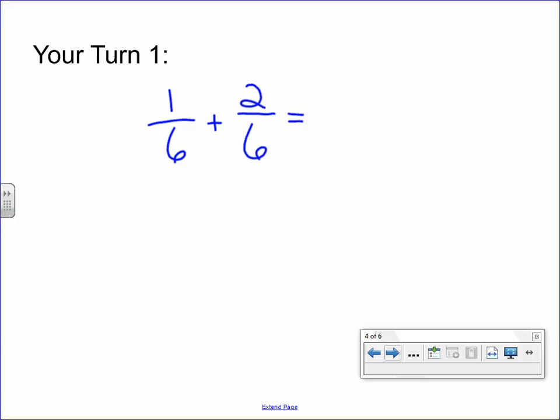All right, if you did the 1 plus 2 for your numerator, you came up with 3. The denominator stays the same, and you end up with 3 sixths. Hopefully, you saw that you can divide both 3 and 6 by 3. And that gives me 3 divided by 3 is 1, 6 divided by 3 is 2, and you end up with 1 half as a simplified fraction.